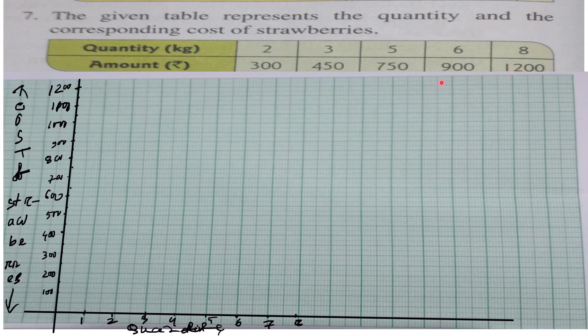Now, the cost of 2 kg is 300. If you plot the cost of 2 kg, opposite to 2 kg on the graph, this value is 300. So this point is opposite to 2 kg, which equals 300.